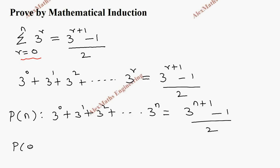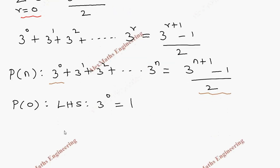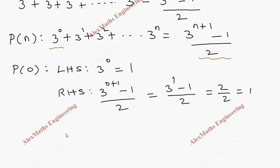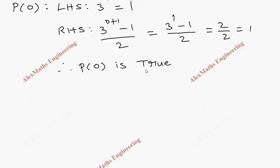Let's take P of 0. On the left hand side it is the first term, 3 power 0, which is 1. On the right hand side, the value of n is 0, so it is 3 power 0 plus 1 minus 1 by 2, which is 3 power 1 minus 1 by 2, which is 3 minus 1 by 2, equals 2 by 2, which is 1. So LHS equals RHS, therefore P of 0 is true.